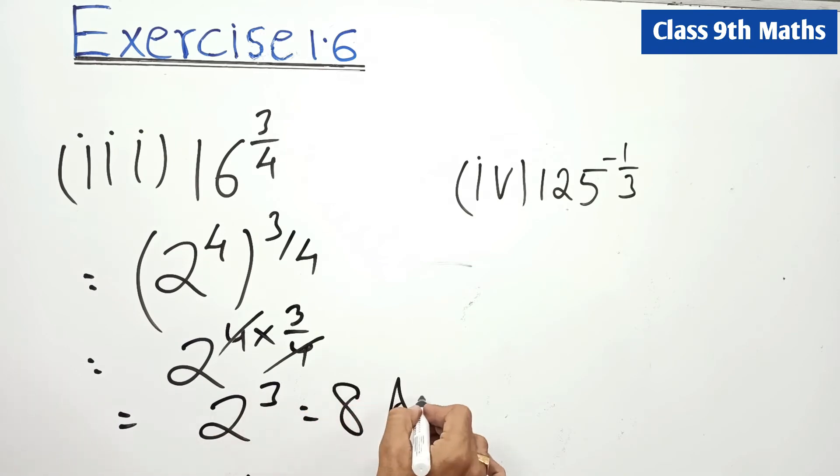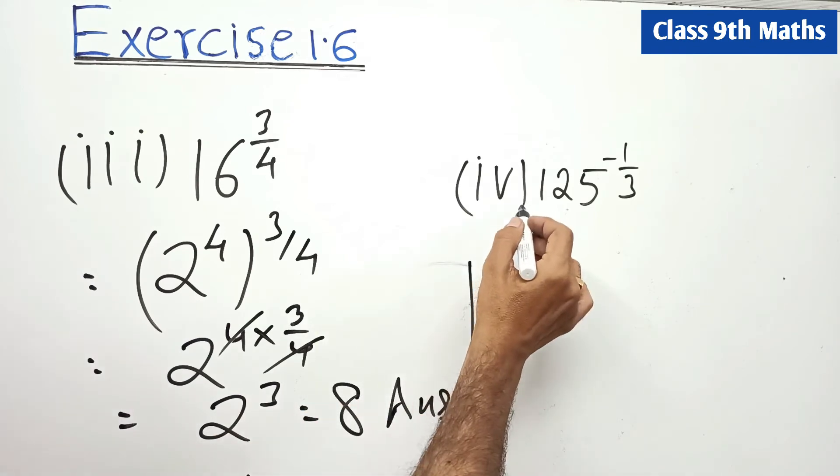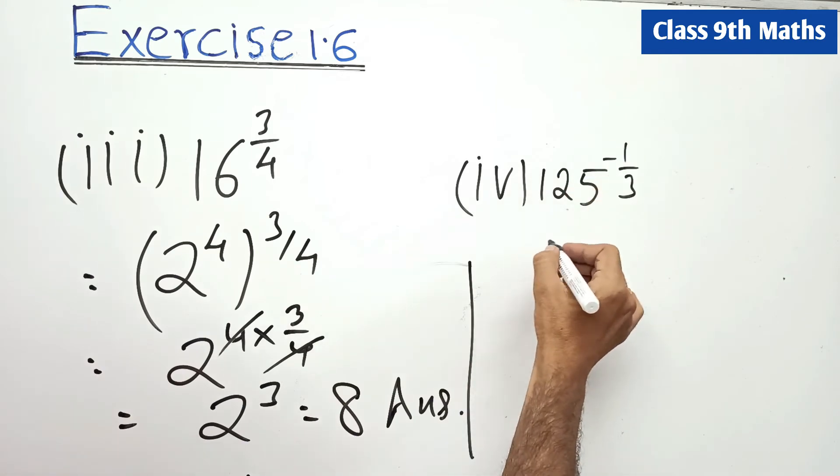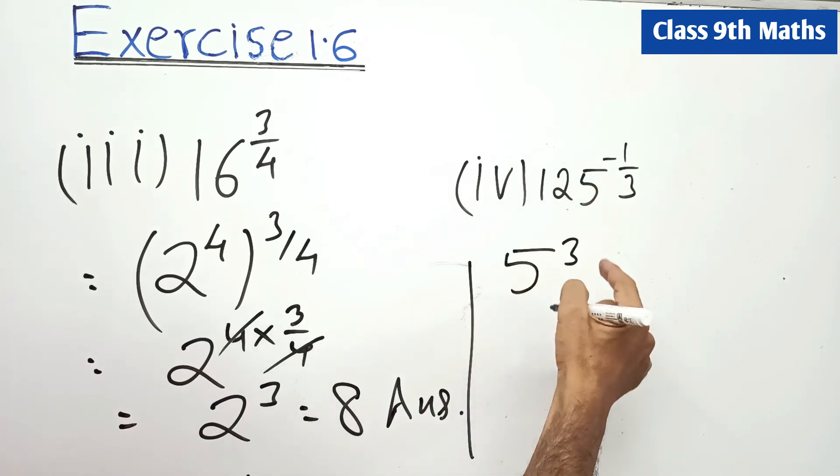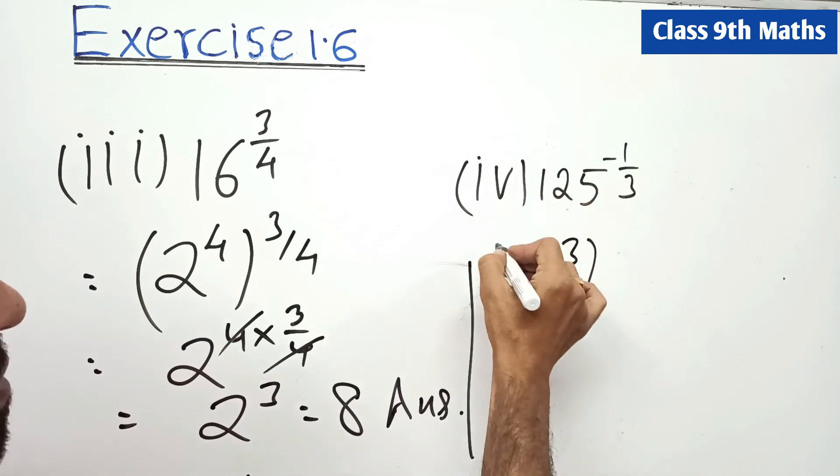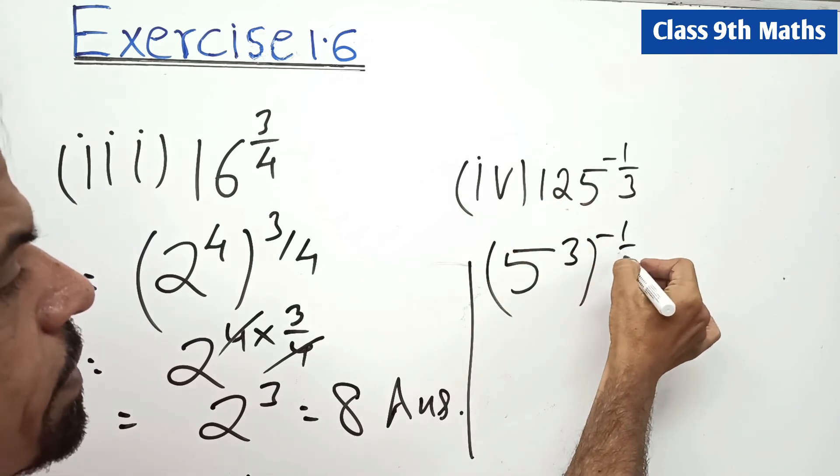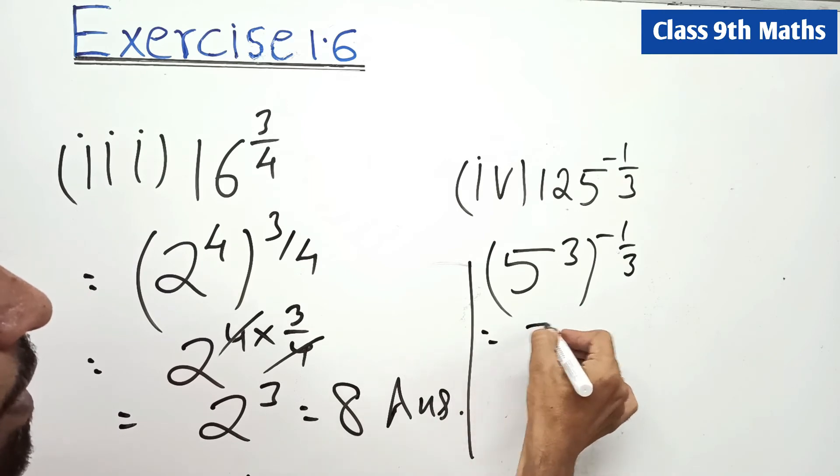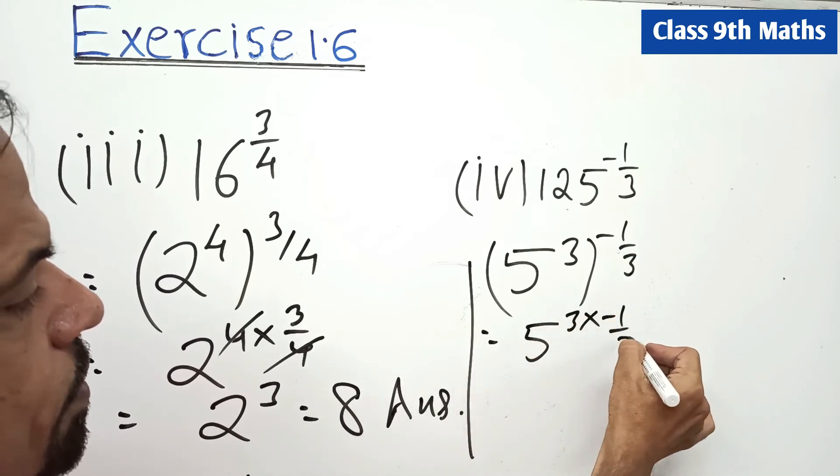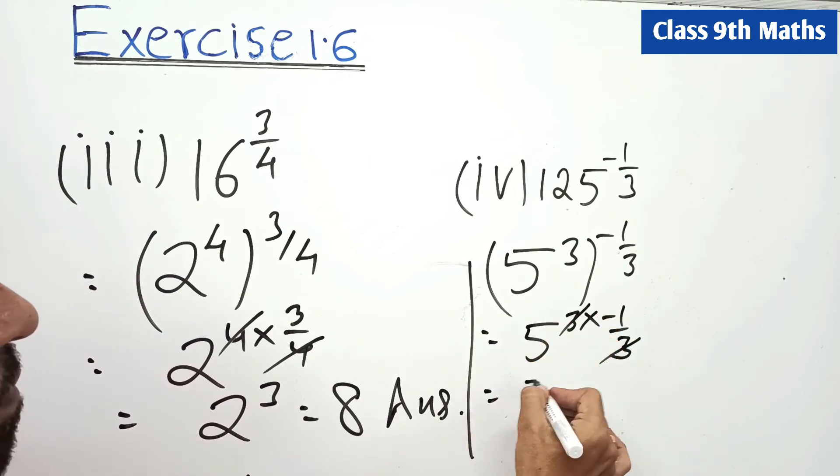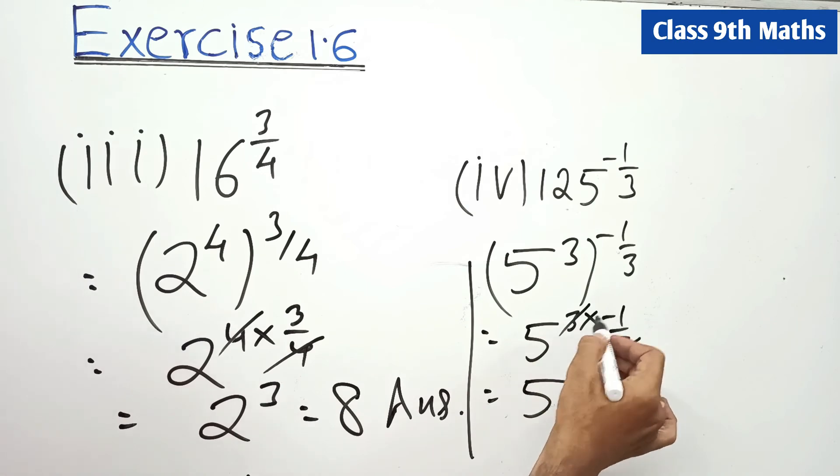Now see, 125 to the power minus 1 by 3 means here 5 to the power 3, because 5×5×5=125, minus 1 by 3. Now this goes out, 3 into minus 1 by 3, 3 and 3 cancel, 5 to the power minus 1.